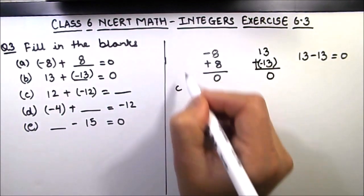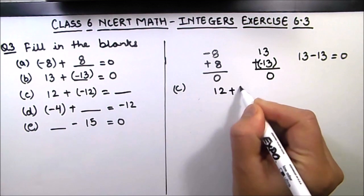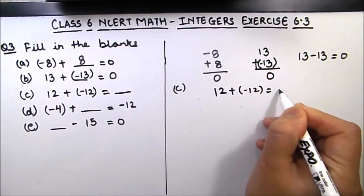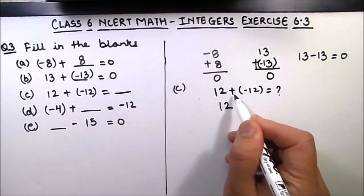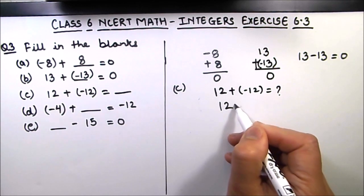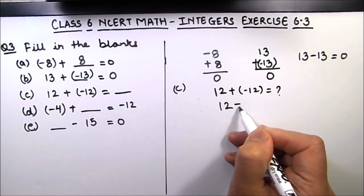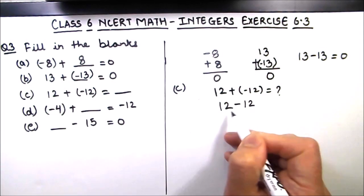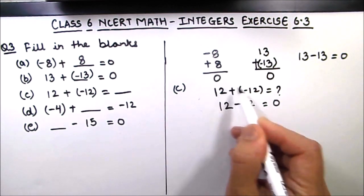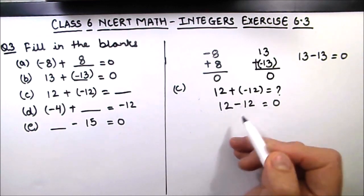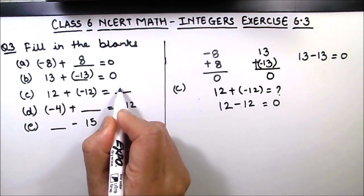Part C is: 12 plus minus 12 is equal to what? We have 12, and then two symbols plus and minus. Plus and minus together make minus, because when the signs are not the same we get minus. So this becomes 12 minus 12, which equals 0. We are adding plus 12 and minus 12, so they cancel out to give 0. The third blank is 0.